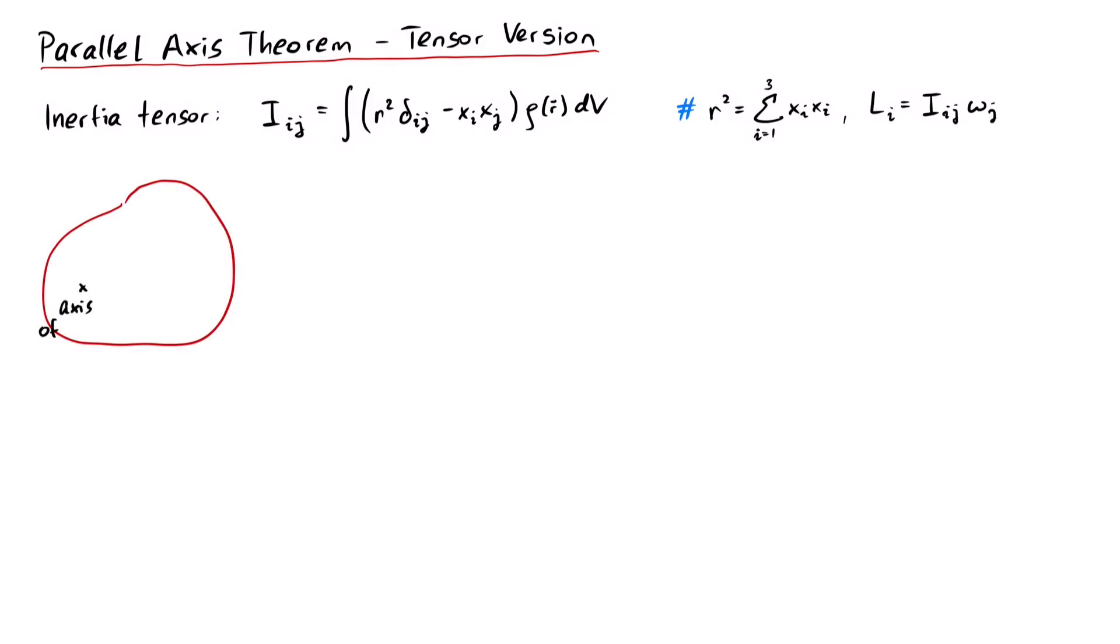If we consider a rotation around a random axis, x is the vector from the axis to a volume element dv. However, we will express x as a plus r-cv, where a points from the axis of rotation to the center of mass, and r-cv points from the center of mass to the volume element.